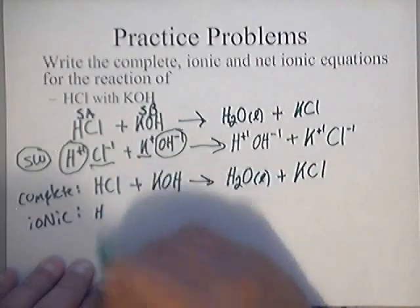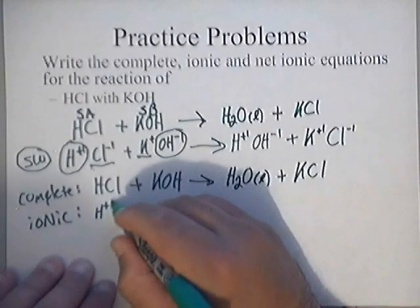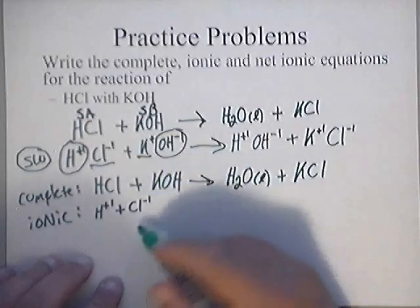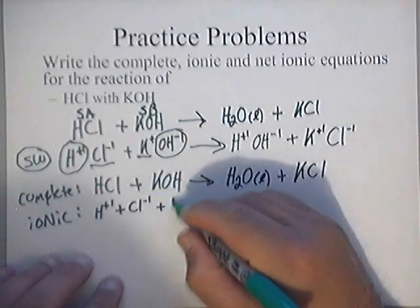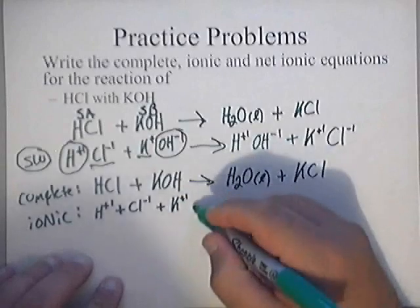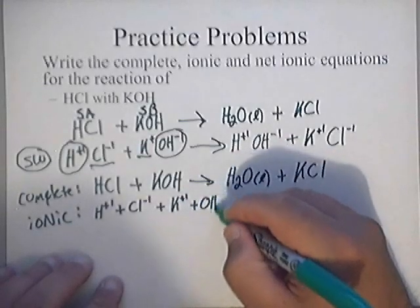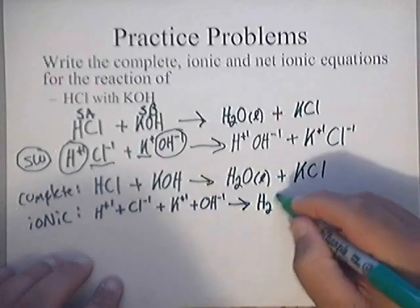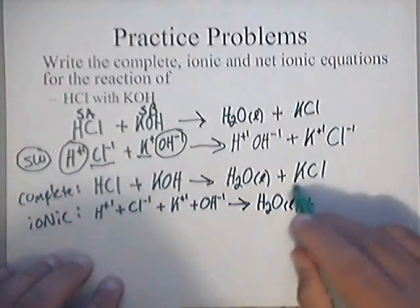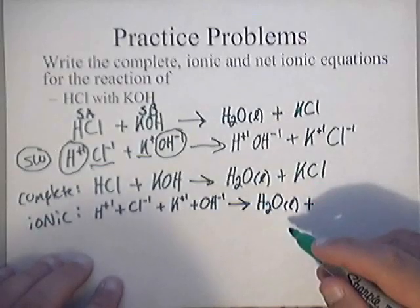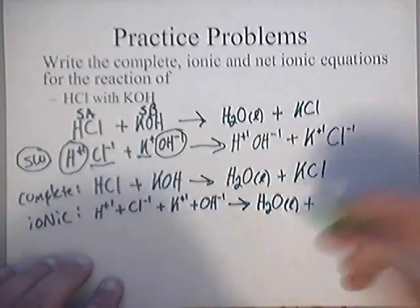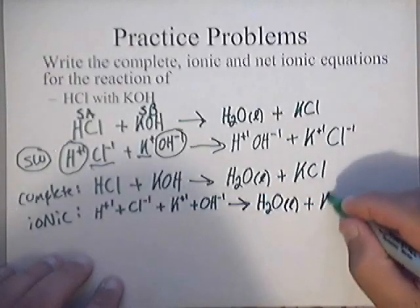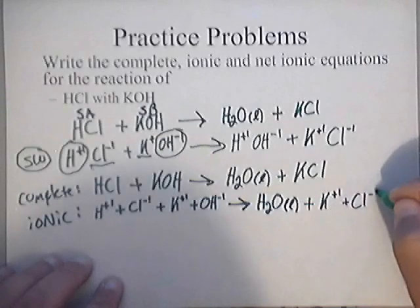So the total ionic equation is: H⁺ (aq) + Cl⁻ (aq) + K⁺ (aq) + OH⁻ (aq) yields H₂O (l) plus K⁺ (aq) + Cl⁻ (aq). Potassium chloride is a soluble salt according to the solubility chart given in class or available from the website.